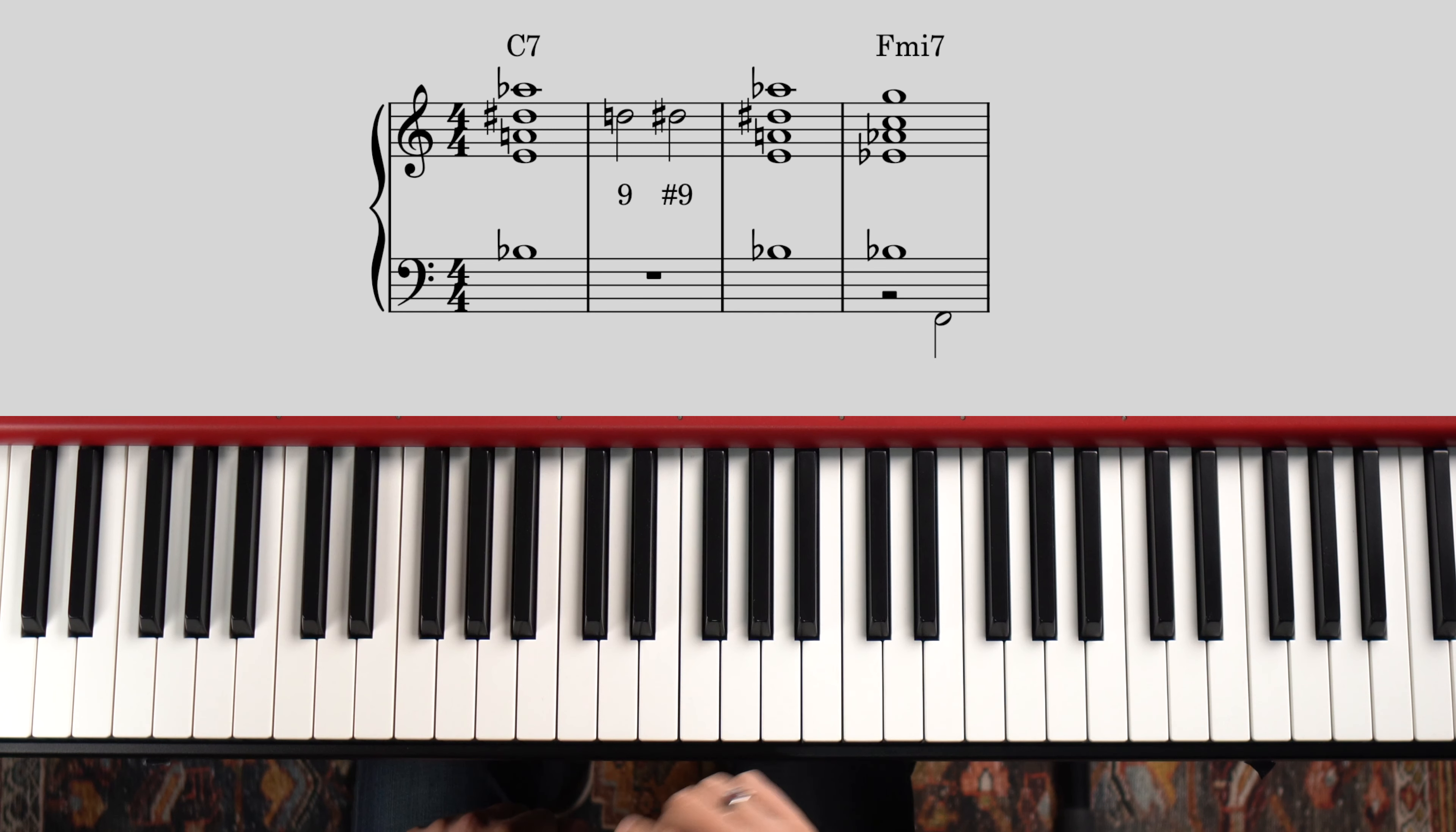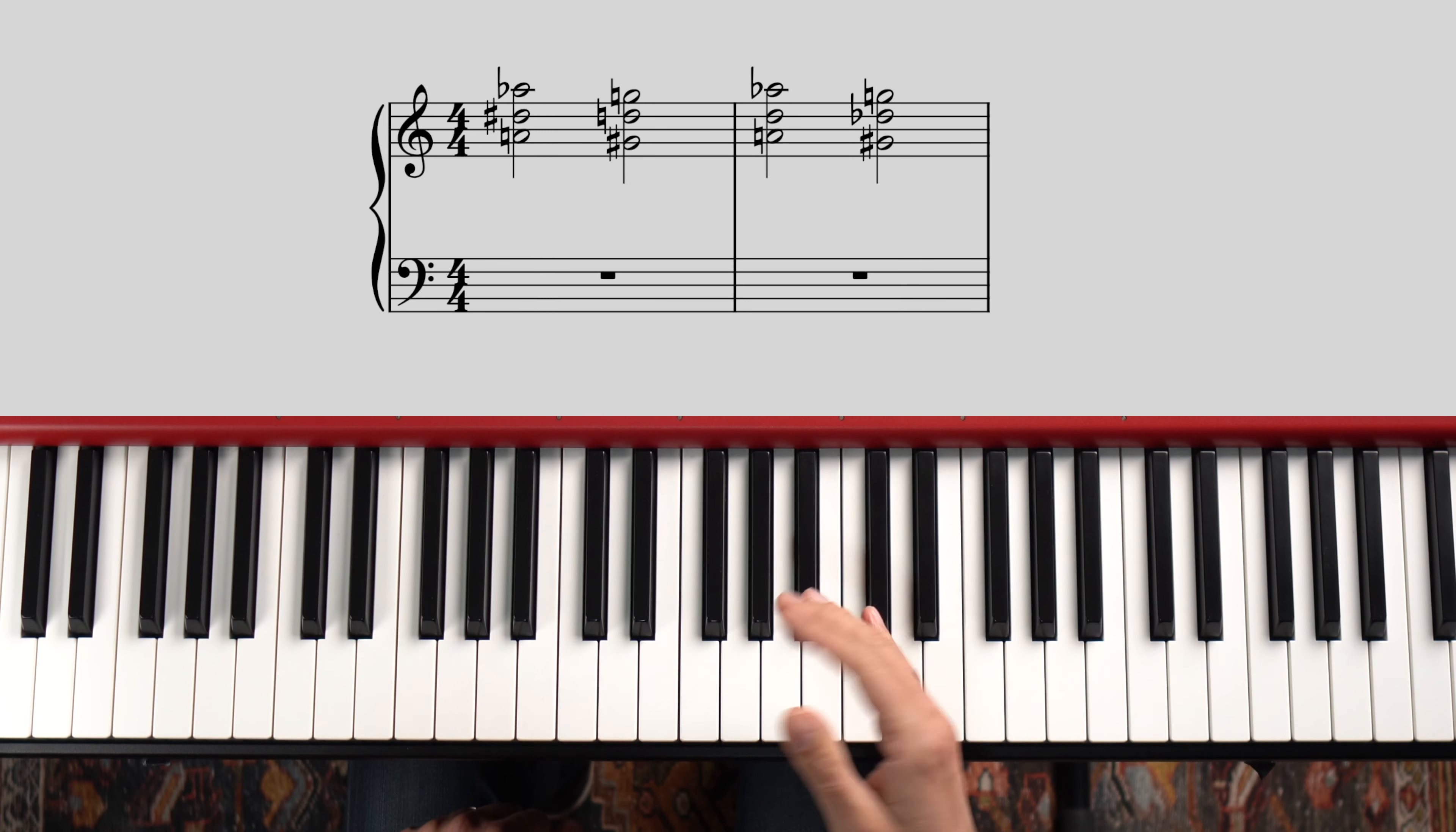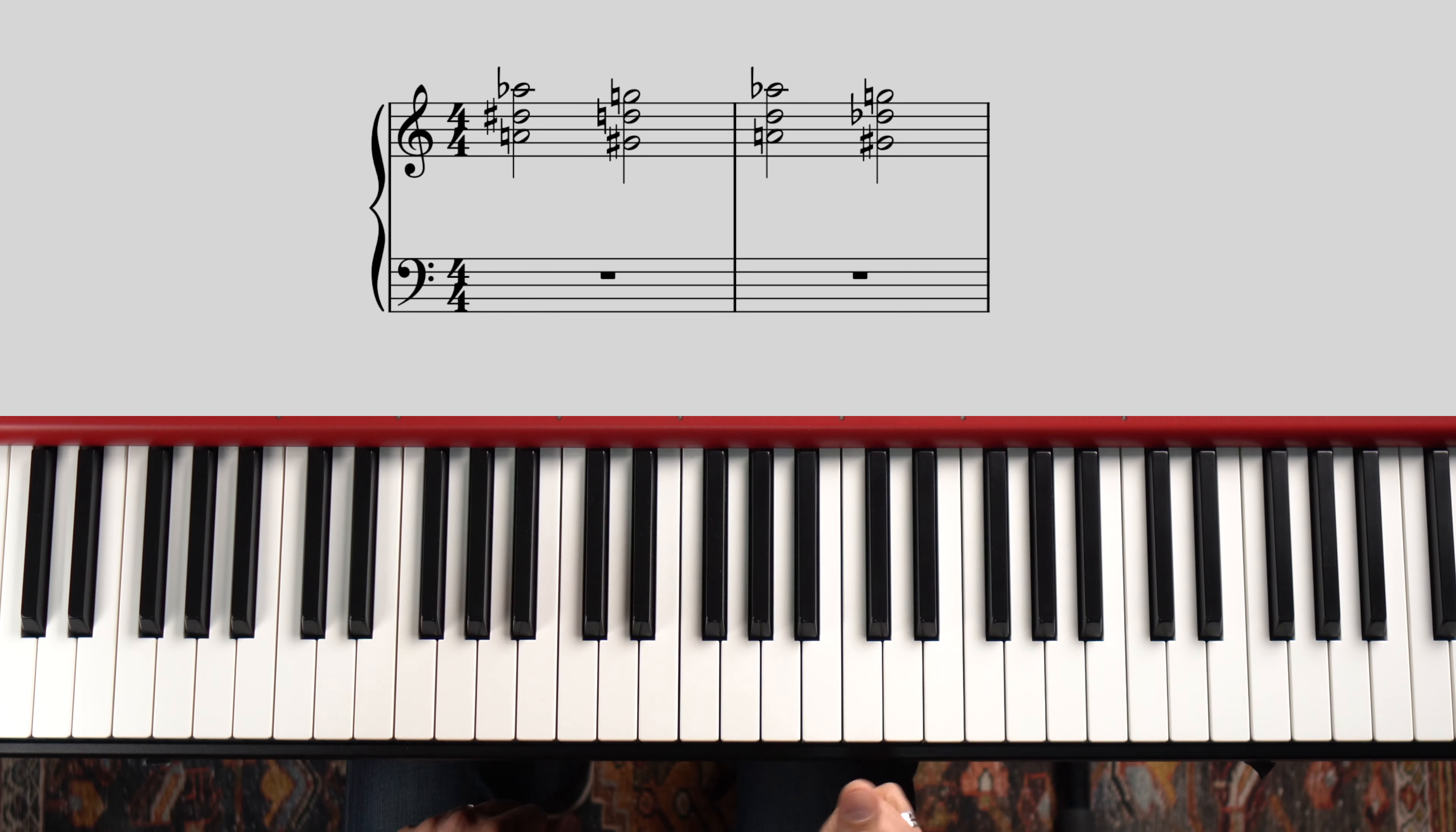And as we did with the A voicing earlier, here's the right hand portion of my C7 chord moved down a half step. The violation in this case being that I have both a 5 and a sharp 5 in my chord.